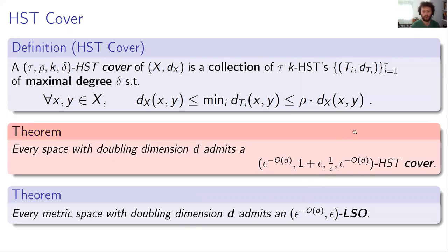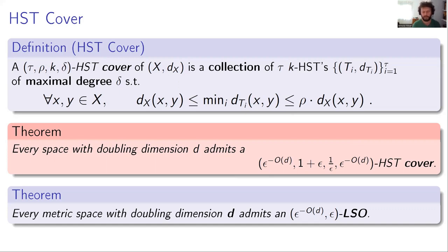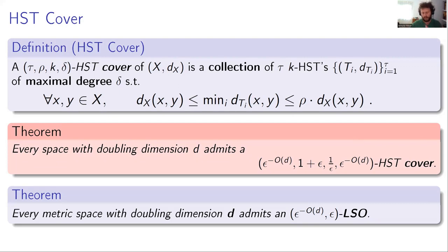To briefly explain how we construct the HST cover: the basic idea uses what we call a pairwise partition cover — a partition of space such that every two points at distance delta are contained in a cluster of diameter about (1+epsilon)*delta. With epsilon-to-the-minus-d partitions this is achievable for every pair of points. We then construct a laminar family from all these partitions such that every pair of points is covered in one of these laminar partitions, and this laminar structure induces the HSTs. For more details, see the full version of the paper or the poster session.